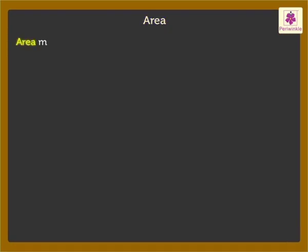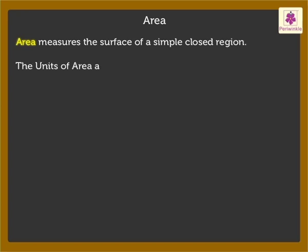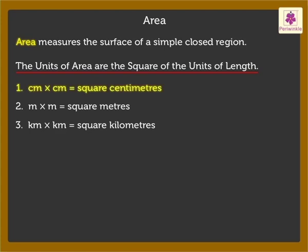What does the term area mean? Area measures the surface of a simple closed region. The units of area are the square of the units of length. Thus area can be expressed in square units such as square centimetres, square metres, or square kilometres.